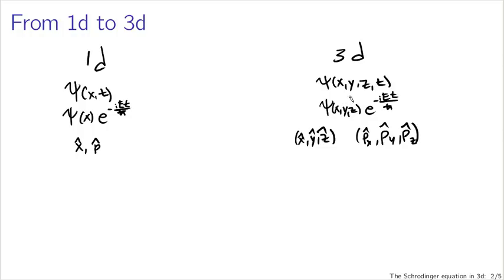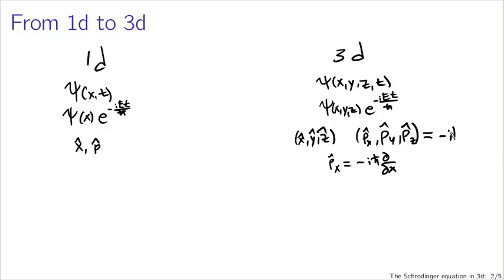The definitions here are more or less what you would expect. For instance, p-x-hat is going to be minus i h-bar times the derivative with respect to x. I have to start being more careful about the difference between total derivatives and partial derivatives now, since we're talking about functions of multiple variables. The full momentum vector operator is going to be written in terms of partial derivatives with respect to x, y, and z. We have notation for that: minus i h-bar times this upside-down triangle — the gradient operator from vector calculus — read as del, or grad, or the gradient of, depending on what it's acting on.